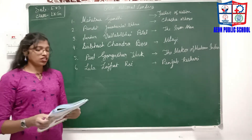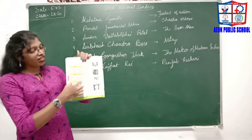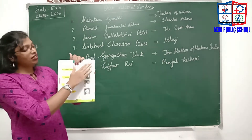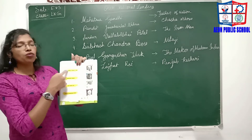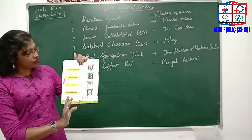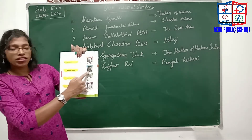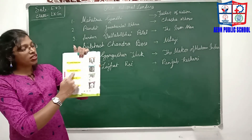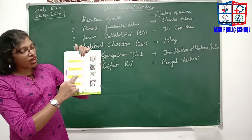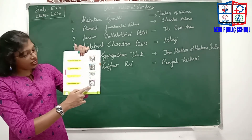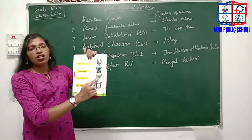Now turn to the page. Here is an activity. There are names on this side and their pictures on that side. You have to match the name with the pictures. This is Subhas Chandra Bose — match here. This is Mahatma Gandhi — match here. Lala Rajpat Rai, the Punjab Kesari. And this is Sardar Vallabhbhai Patel.